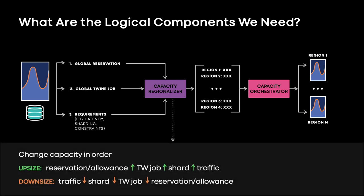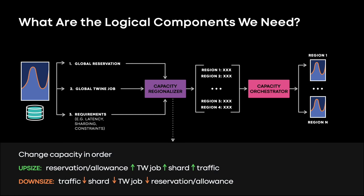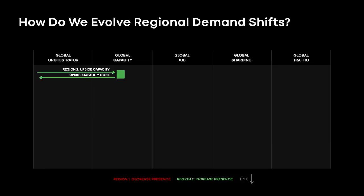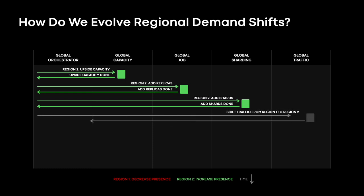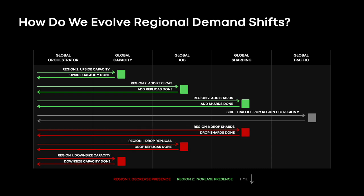The capacity orchestrator will be extensible to support more types of services where more planning or orchestration is required. For example, we can integrate a global shard placement system into global capacity management. This will look similar to how we orchestrate regional shifts today, but with extra steps added in a specific sequence to support globally sharded systems. The capacity orchestrator instructs a globally shard management system to build additional replicas in the new region before traffic shift — this happens after the Twine job has been upsized but before the traffic shift. After the traffic shift, the capacity orchestrator can instruct the global shard management system to drop shard replicas in the old region before downsizing the Twine job. This process allows us to safely integrate and orchestrate regional shifts for globally sharded services.